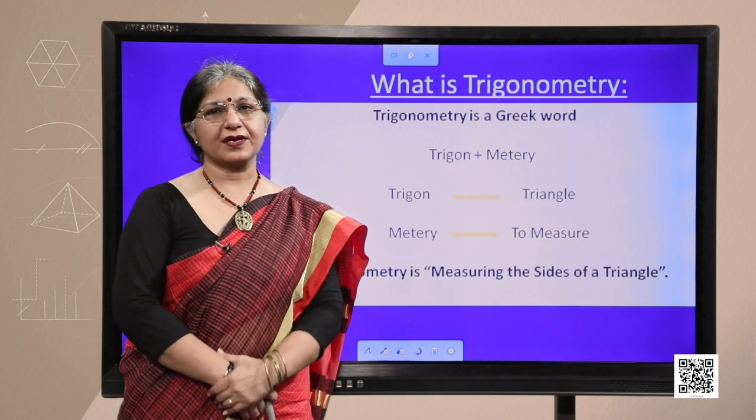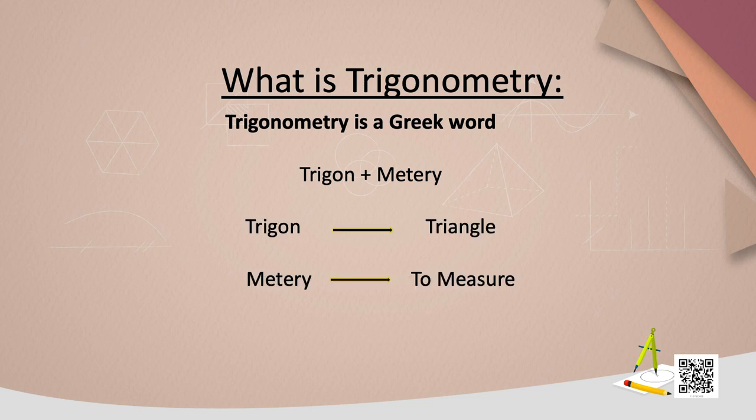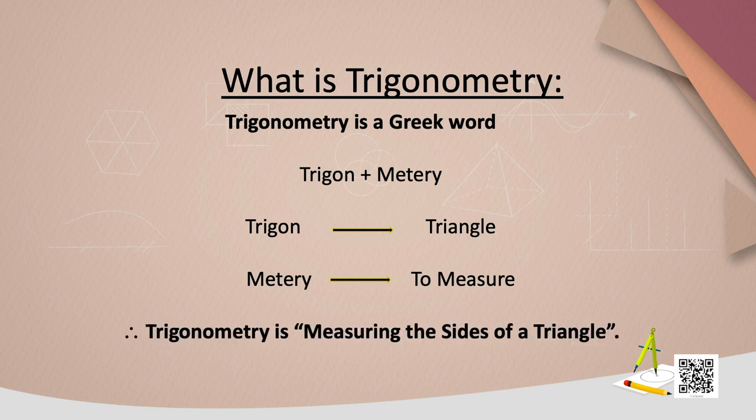Now what is trigonometry? If you break the word into trigon plus metri, where trigon is triangle and metri is to measure. So trigonometry is measuring the sides of a triangle.